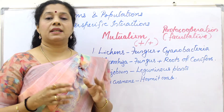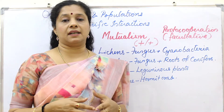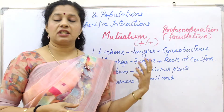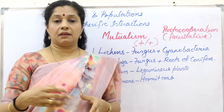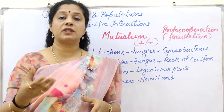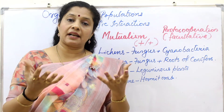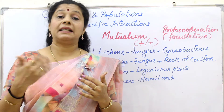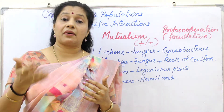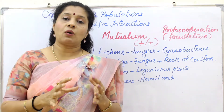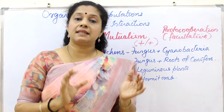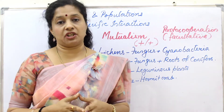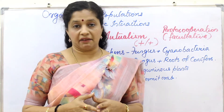The next example is mycorrhiza — an association of a soil fungus with the roots of trees, especially conifer trees like Pinus. The genus of fungus is Glomus, and it forms a mutualism with the roots of pine trees. The fungus derives carbohydrates from the plant, while in turn it gives water and minerals — especially phosphorus — to the plant. Also, as long as the fungus is present in the root, no other root pathogens can attack the plant, providing protection as well. So both are mutually benefited.